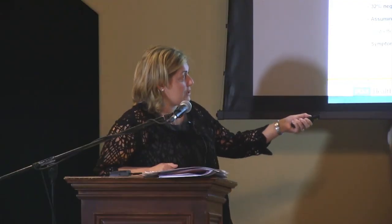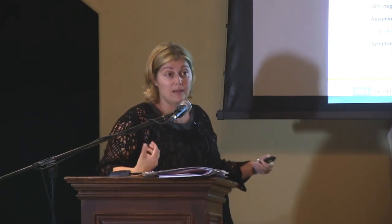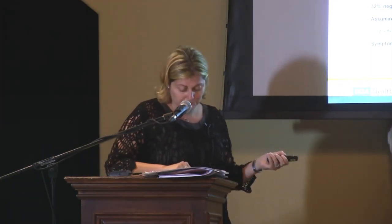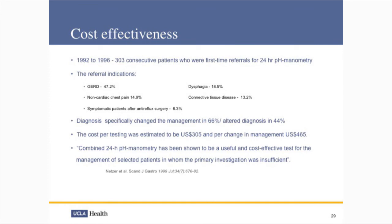Doctors continue therapy even in the absence of normal findings because patients report symptomatic improvement. A Swiss study published in the Scandinavian Journal of Gastroenterology took 300 patients referred for the first time, with conditions ranging from GERD to connective tissue disorder. The cost per testing was estimated at $305 American dollars, and the cost to change management was $465 per patient. Combined 24-hour pH and manometry has been shown to be useful and cost-effective — the diagnosis was changed in management in 66% of patients, altered diagnosis in 44%, and confirmed in only 38%.